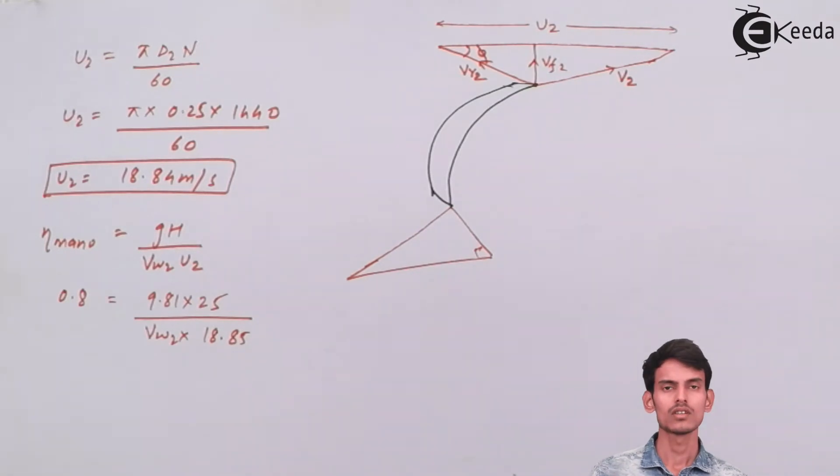In this formula, everything is known except for the value of Vw2. The manometric efficiency is given, H is given, the value of g is standard, and the value of u2 we have already calculated. So the value of Vw2 can be found easily.